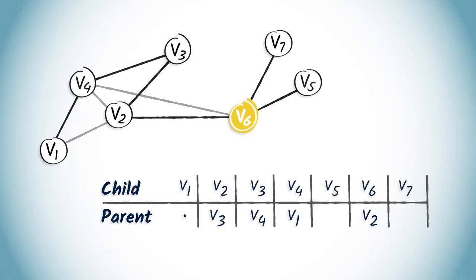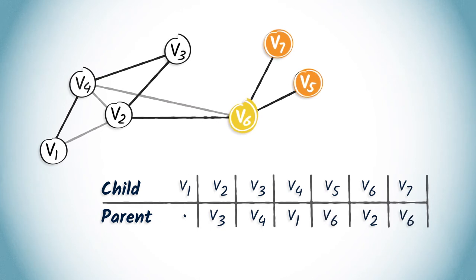Finally, V6 has two children, V7 and V5. So let's add V6 in the columns corresponding to V5 and V7. So that's it, the routing table is complete.